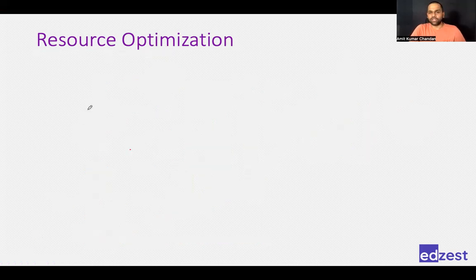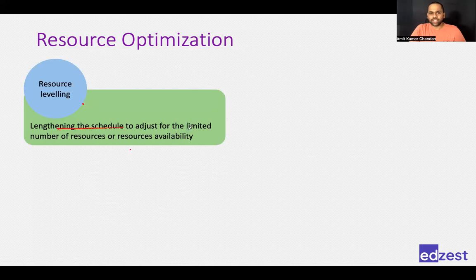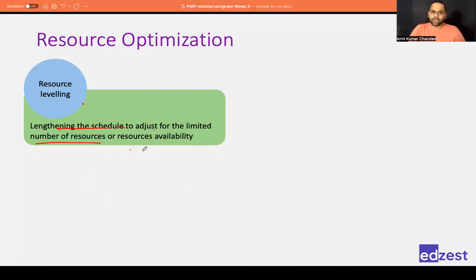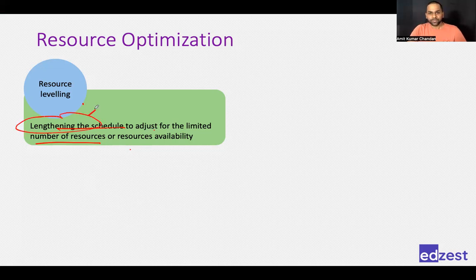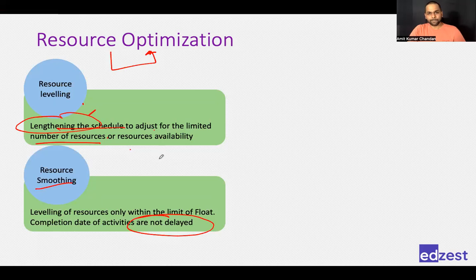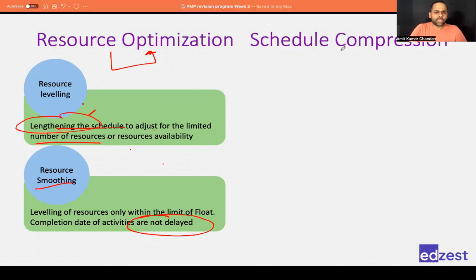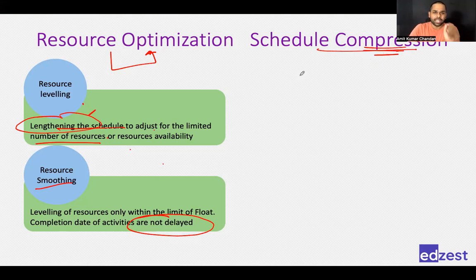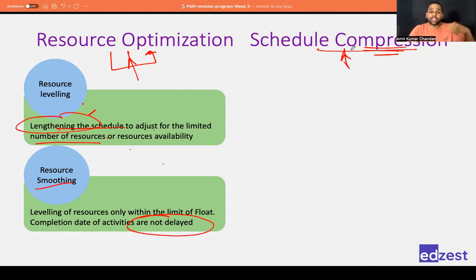Resource leveling means lengthening the schedule to adjust for limited available resources. Resource smoothing means adding extra resources so that activities complete without delaying the schedule. The objective of both is resource optimization — using the same or similar number of resources throughout the project. Next is schedule compression, where the objective is different: to complete the project faster.